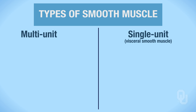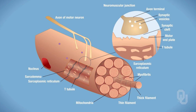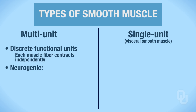Multi-unit smooth muscle functions as discrete functional units, meaning each muscle fiber contracts independently of all the other fibers. Is that similar to skeletal muscle? The answer is yes. Skeletal muscles have motor neurons that tell individual fibers to contract, and multi-unit smooth muscle works the same way — these muscle fibers are contracting independently of each other.